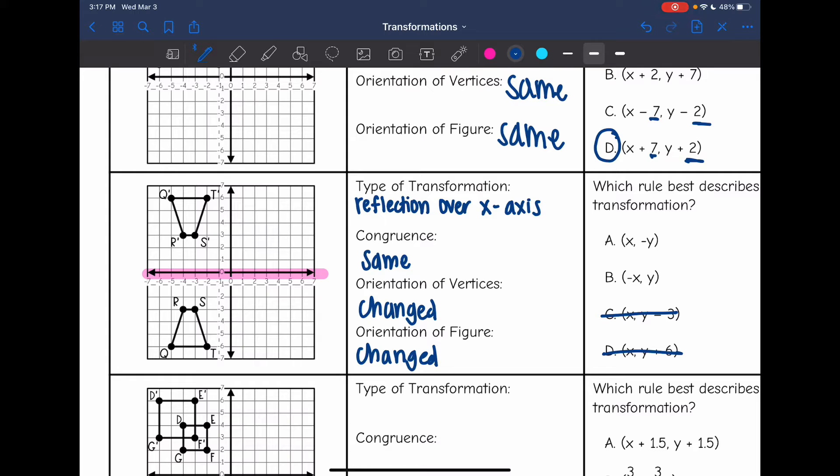Now let's write out a set of corresponding pairs so we can figure out the rule. I'm going to do S and S prime. So S was at negative 3, negative 3. And then S prime is at negative 3, 3.